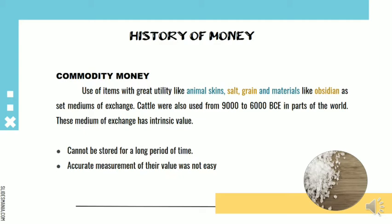Just like bartering, the use of commodity money as a medium of exchange had disadvantages as well. Firstly, it was a problem to store some of them for a long time — for example, it is very difficult to maintain the freshness of animal skin over a long period. Secondly, the accurate measurement of their value was not easy. For these reasons, some societies started to use precious metals such as gold and silver.